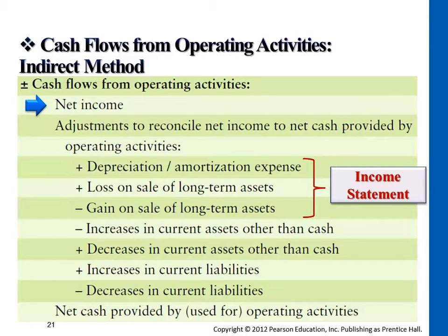Depreciation was subtracted in net income earlier, so we add that amount back, whatever the amount is. Any depreciation or amortization expense, we will add it to net income. It was subtracted earlier, but it's not a cash expense, so we add it back.